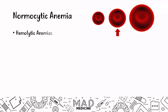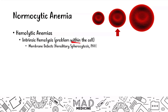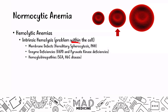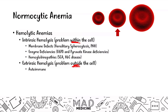Since we're going to be talking about hemolytic anemias today, let's discuss some of the intrinsic causes. Keep in mind these are issues that occur within the cell — problems with membrane deficits, enzyme deficiencies, and hemoglobinopathies. With extrinsic causes, these are problems that occur outside of the cell, including autoimmune disorders, microangiopathic and macroangiopathic issues in the big and small blood vessels, as well as infections.